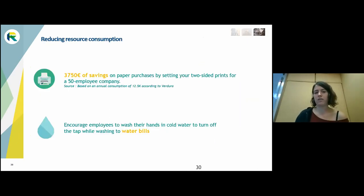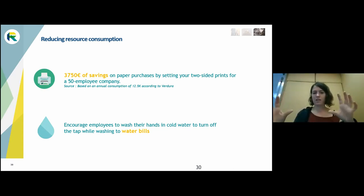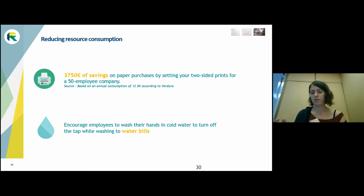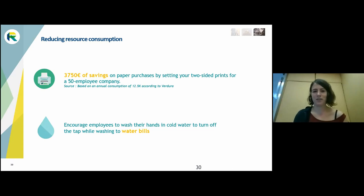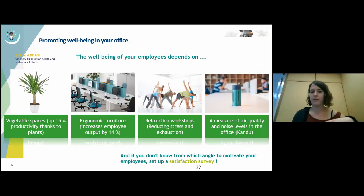For resources, you can recycle cigarettes and other waste in the office. You can also reduce paper use — reduce printing, and post information about the impact. At GreenFlex, there is a sign by the paper towels saying that most people use three sheets — can you use only one or two? This kind of challenge with employees helps reduce consumption. There are also many things you can do for social well-being.